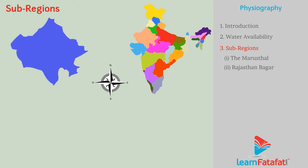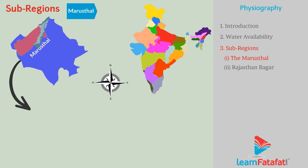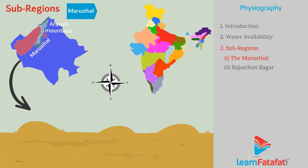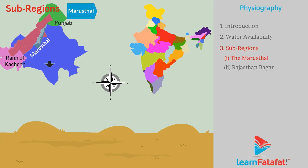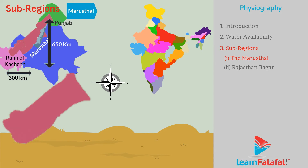Sub-regions. First, the Marusthal. It is the sandy, arid desert area of western Rajasthan, located to the west of the Aravalli Mountains. It extends from the Rann of Kutch till Punjab, and is 650 kilometers long and 300 kilometers wide. It covers 8 districts of western Rajasthan.